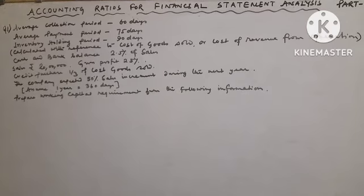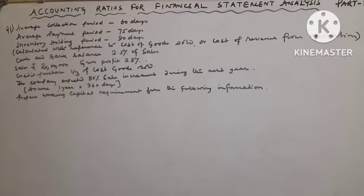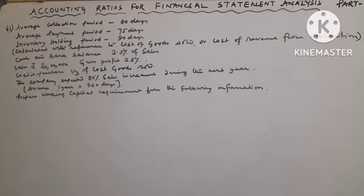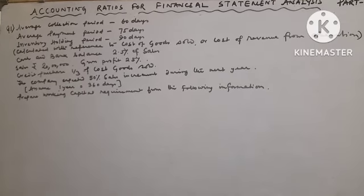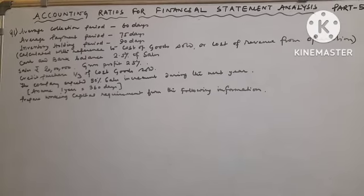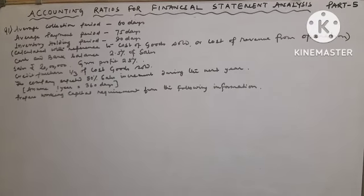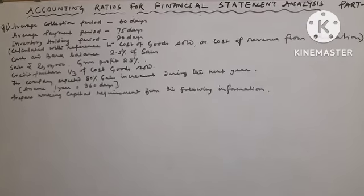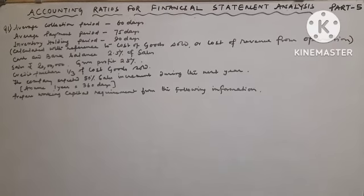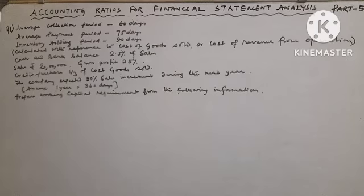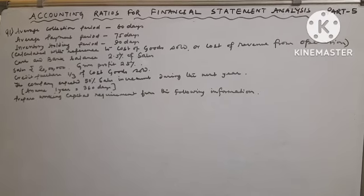Question given: average collection period 60 days, average payment period 75 days, inventory holding period 90 days, calculated with reference to cost of goods sold or cost of revenue from operation, cash and bank balance 2.5% of sales, sales rupees 20 lakhs.